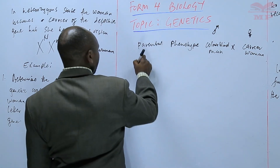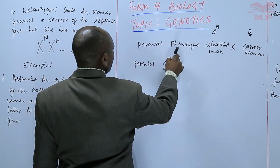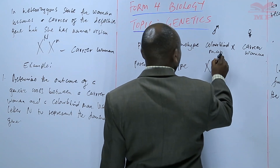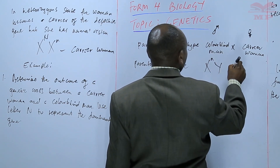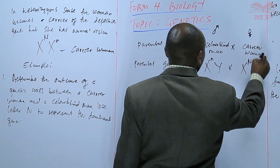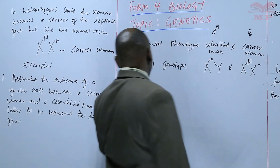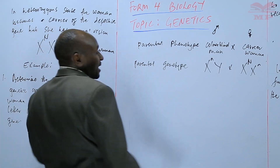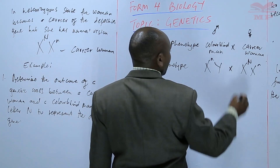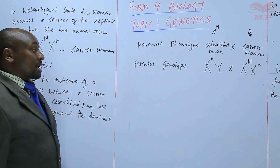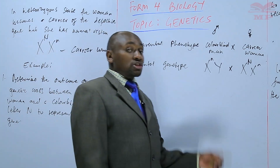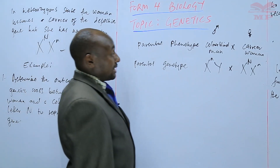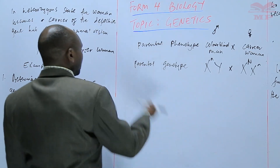The parental genotype is X(n)Y for the colorblind man and X(N)X(n) for the carrier woman. Remember, we use the letters to show the genotype, and in this case we must indicate whether it is the man or the woman, because this is a sex-linked trait — unlike other cases where we didn't need to use XY and XX. Now for the gametes.